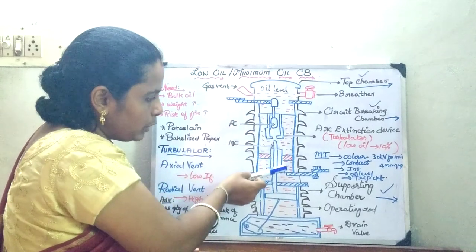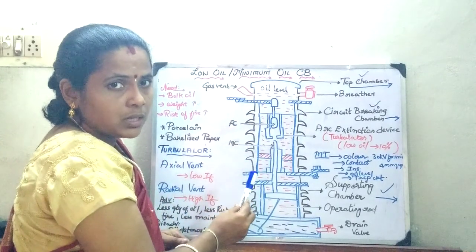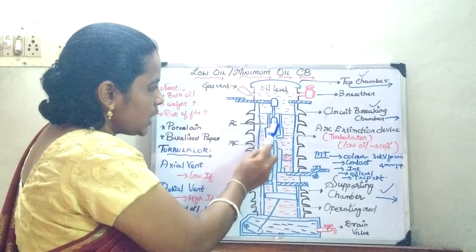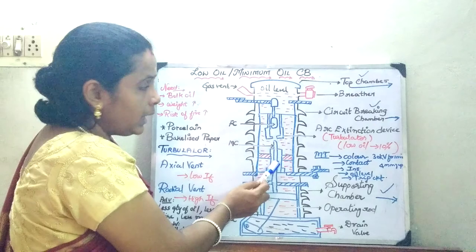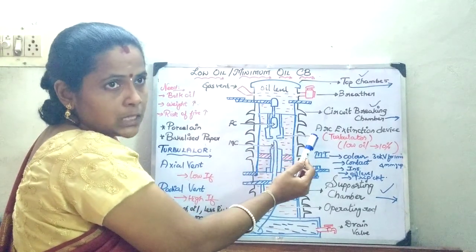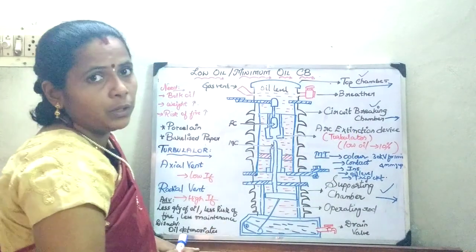Now here in the top chamber where the concentration of the function is obvious, you are going to have a fixed contact, a moving contact, and an arc control device. In the last case we have seen the arc splitters. Here the arc extinction device is going to be the tubulator.